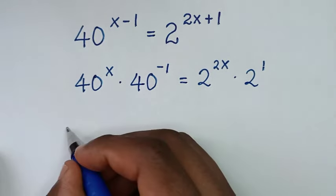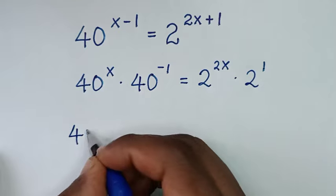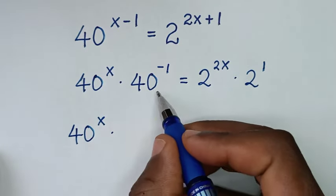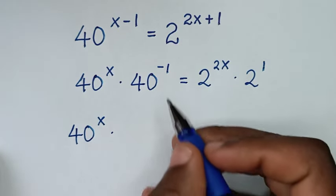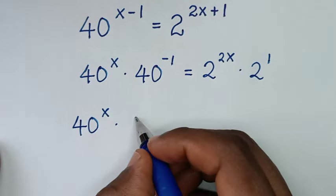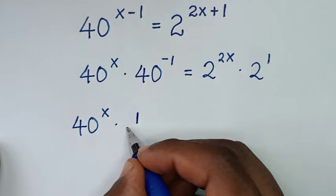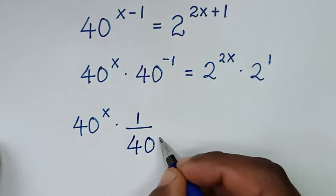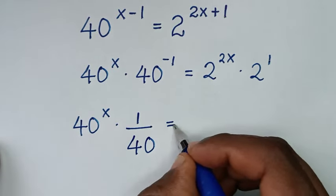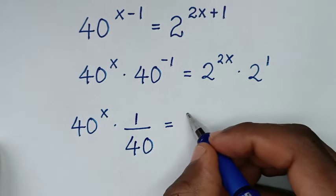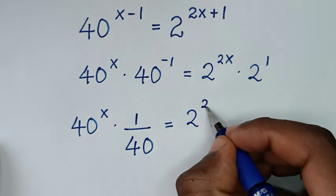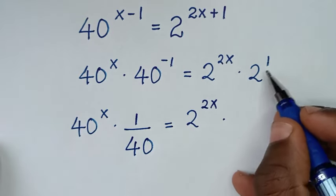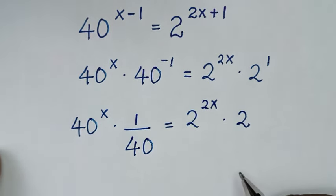So it will be 40 power of x times 40 power of negative 1, which is the same as 1 over 40, and that is equal to 2 power of 2x times 2 power of 1, which is 2.